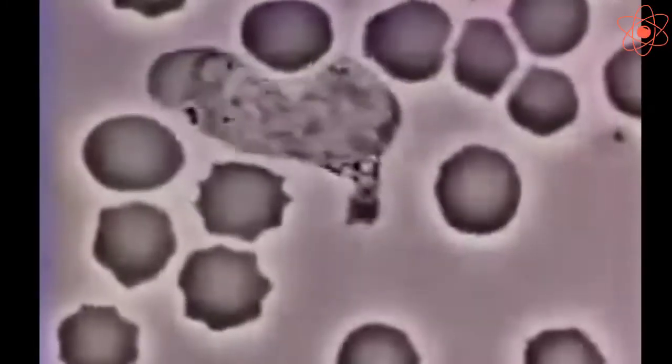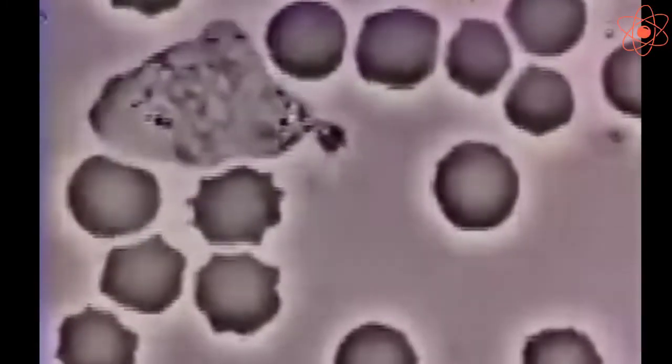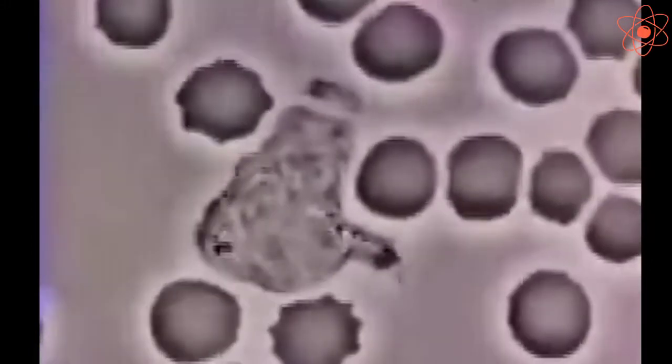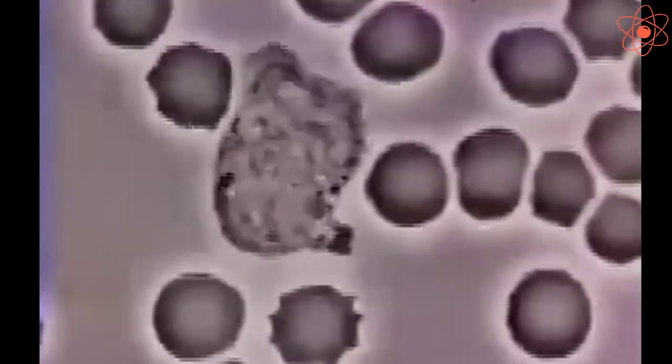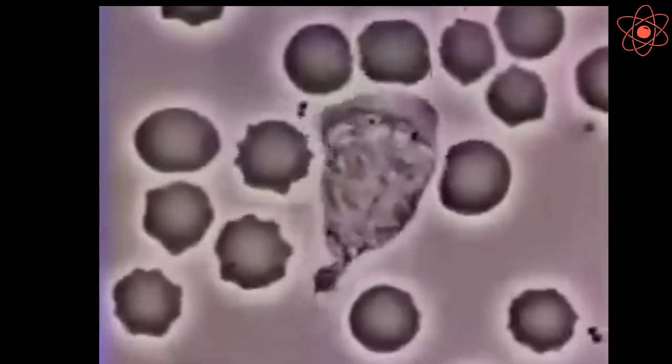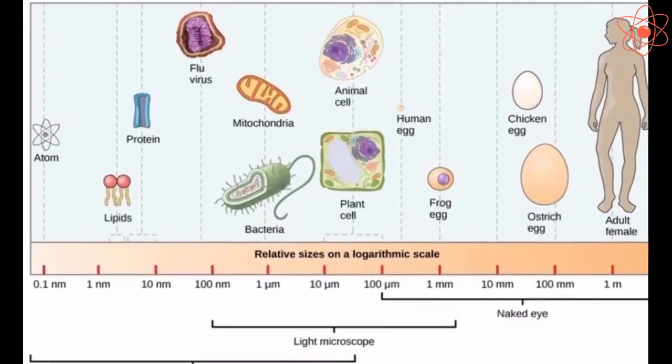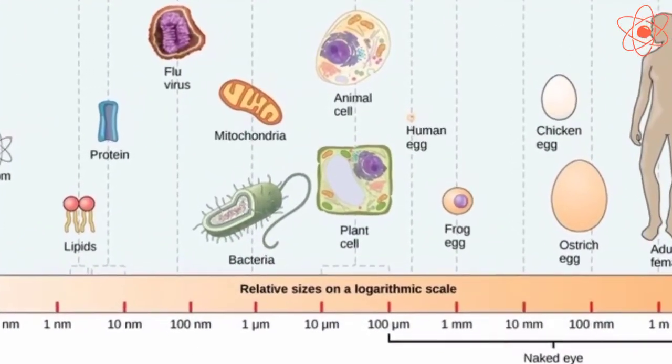White blood cells are irregular or have no shape. This helps them squeeze out of the blood capillaries by changing their shape. Cell size may vary from a micrometer to a few centimeters.